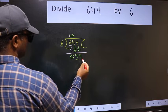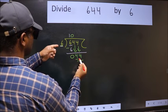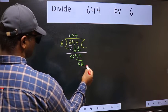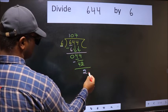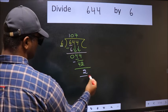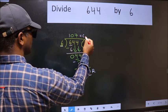Now 44. A number close to 44 in the 6 table is 6 times 7 equals 42. Now we should subtract. We get 2. No more numbers to bring down, so we stop here. This is our remainder and this is our quotient.